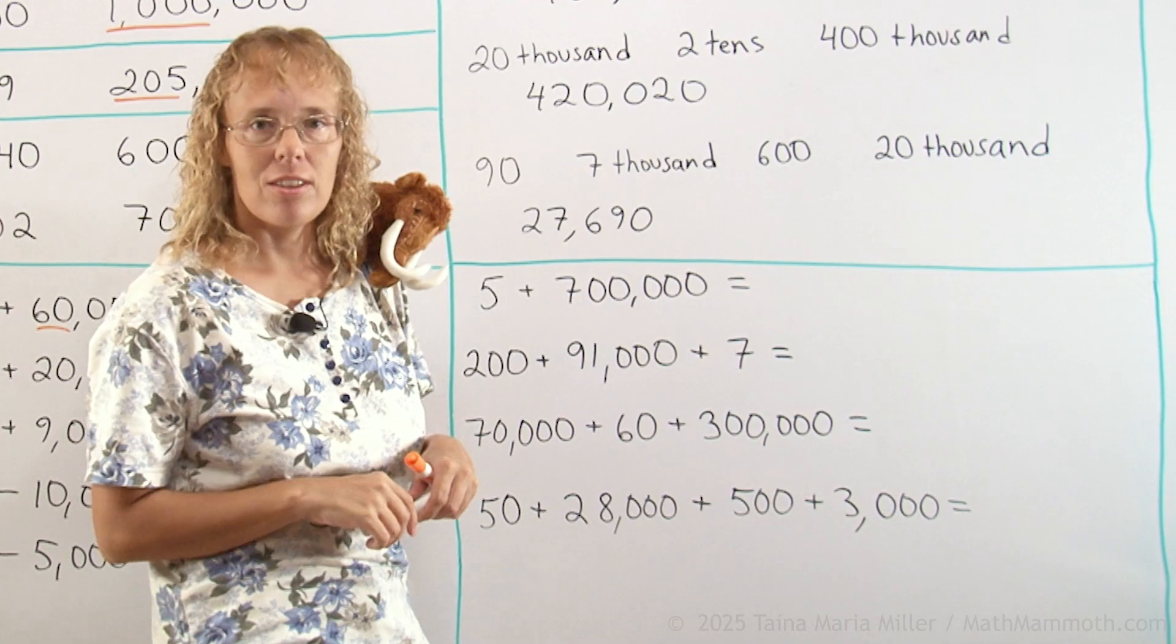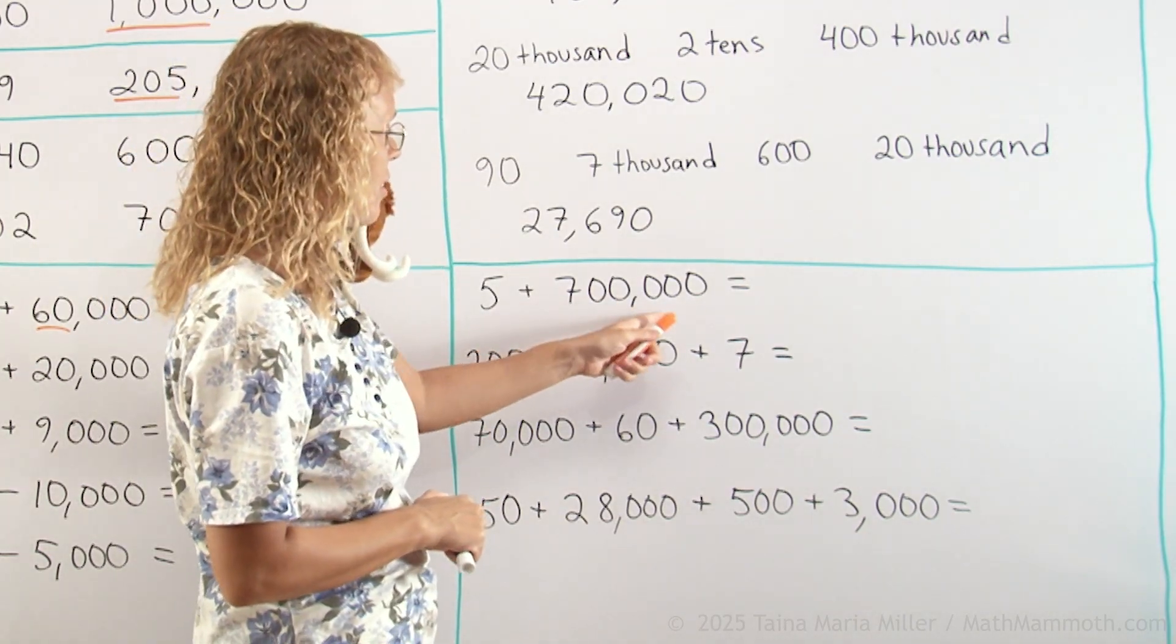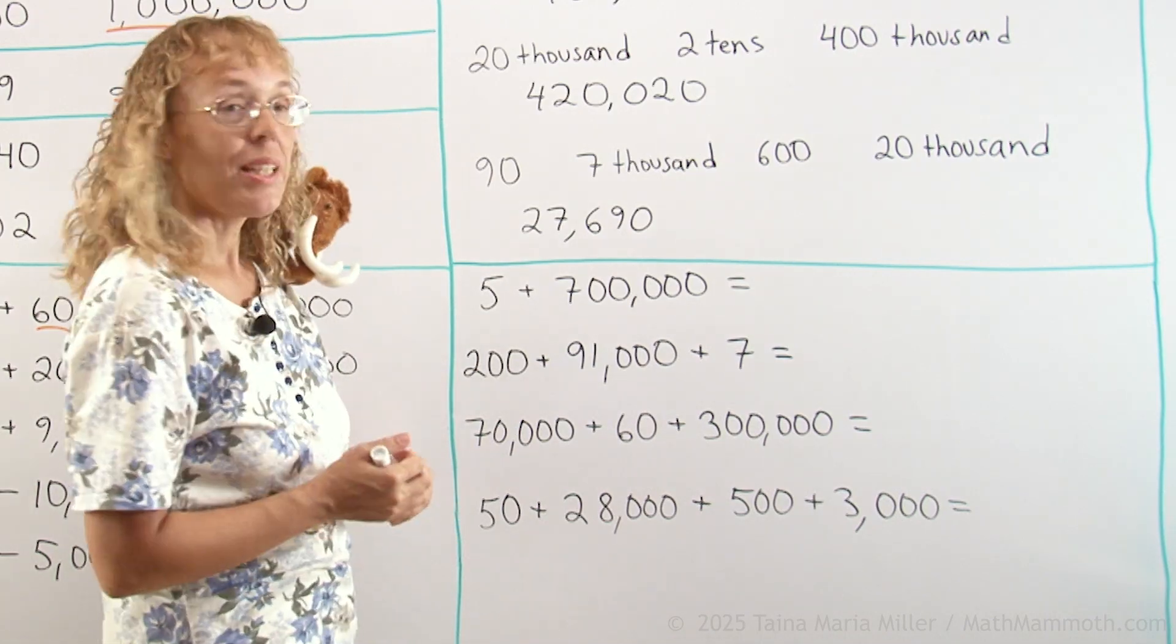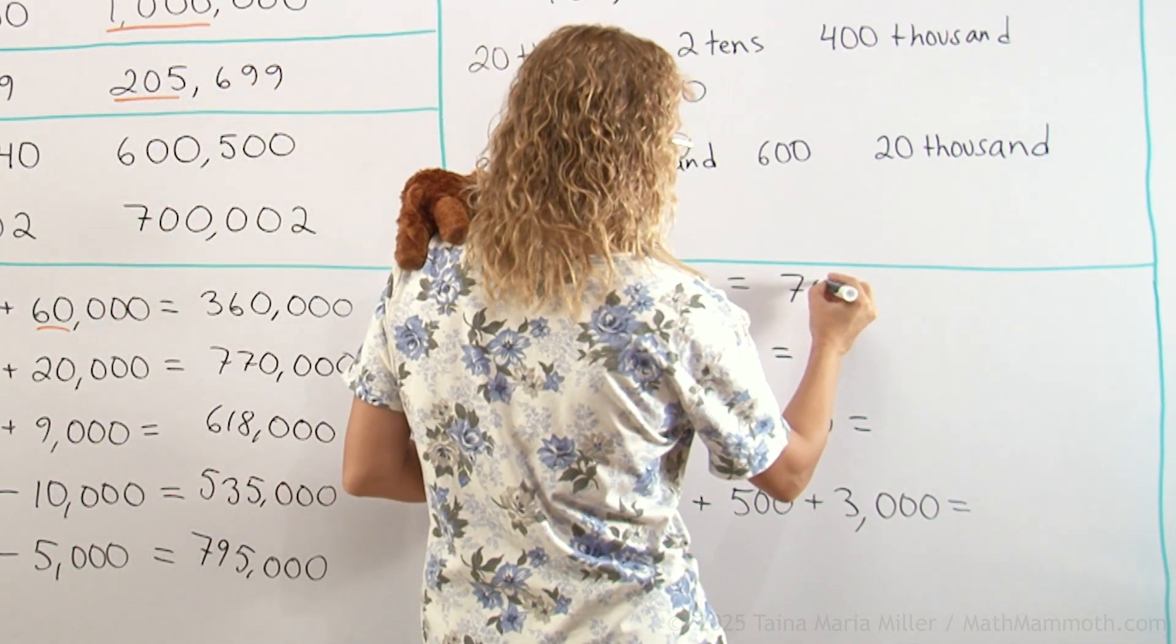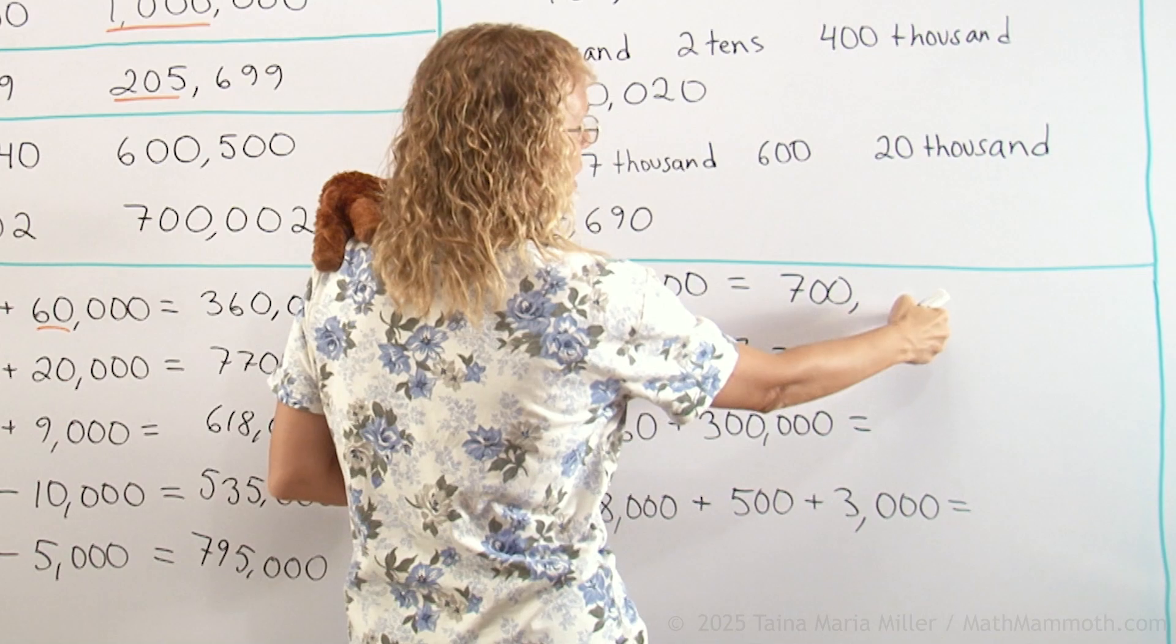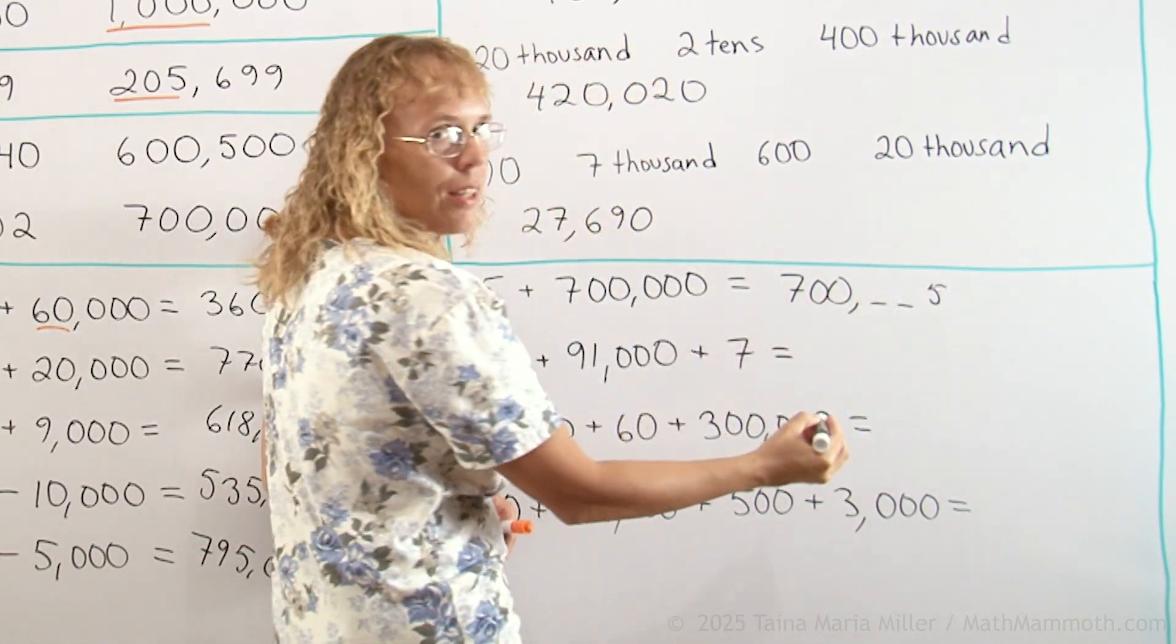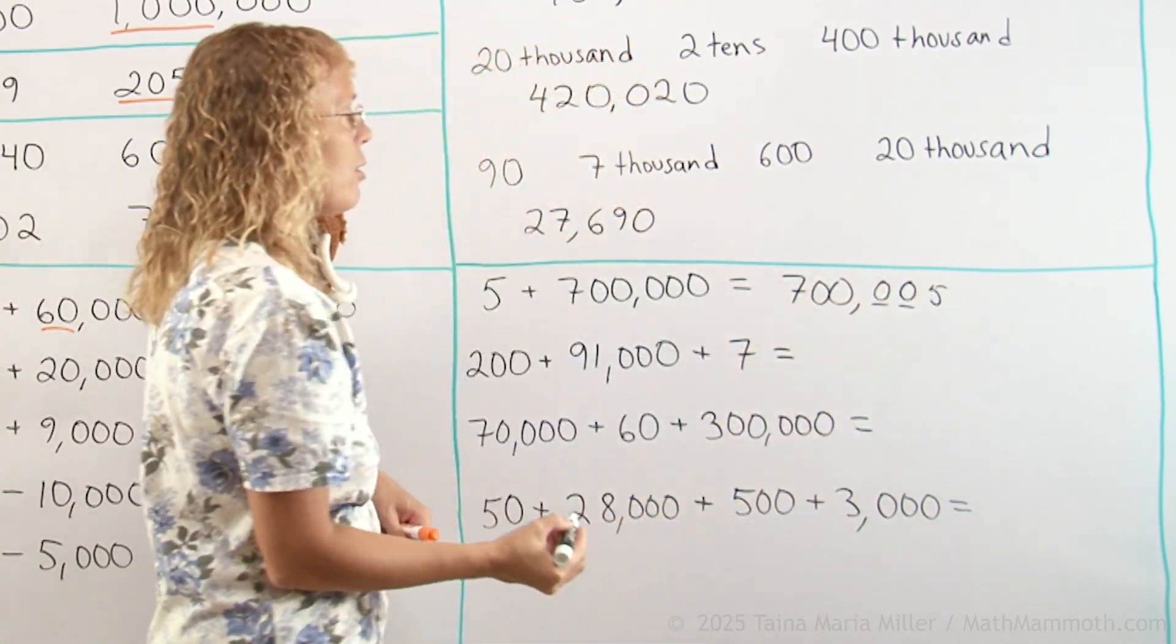Okay. Me and Matthew are now going to solve the last problems here. Five plus seven-hundred-thousand. That's to be here because it is five ones, five units. Seven-hundred-thousand, five.